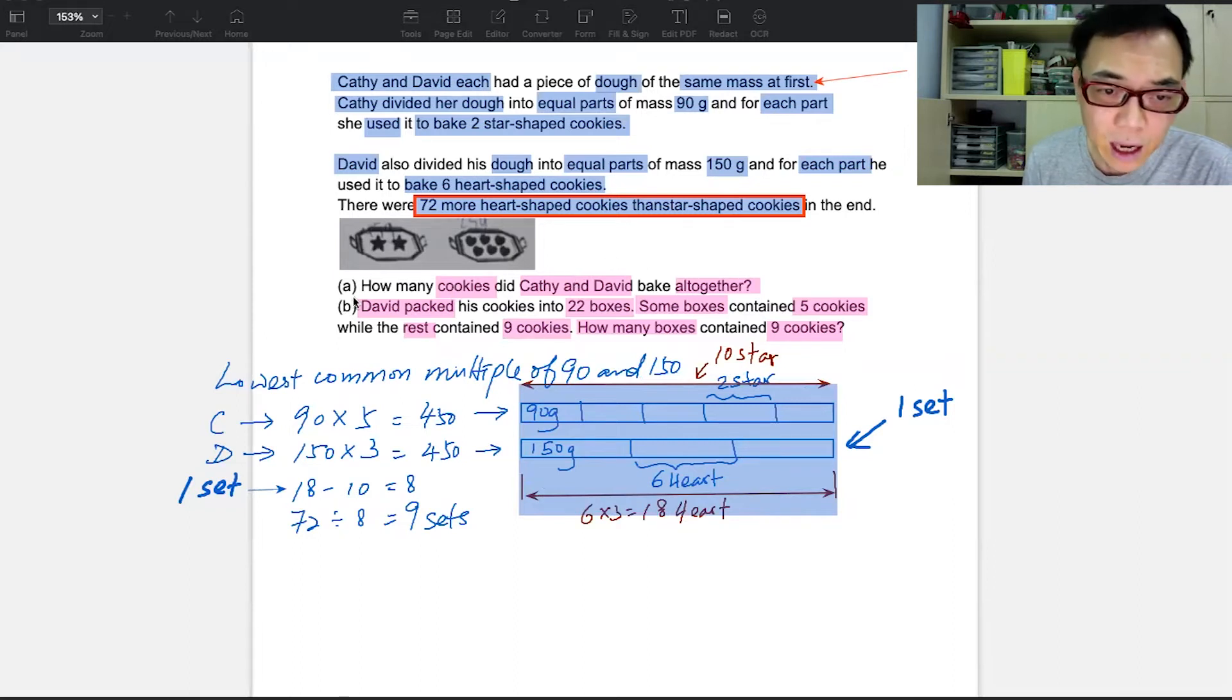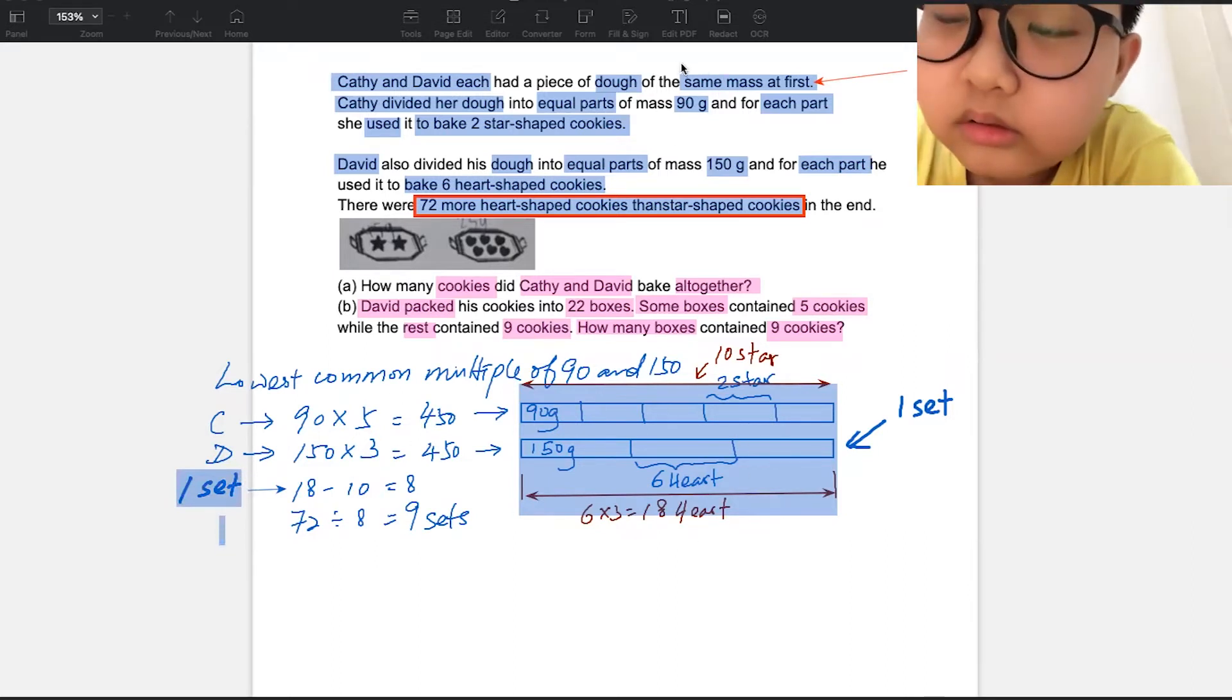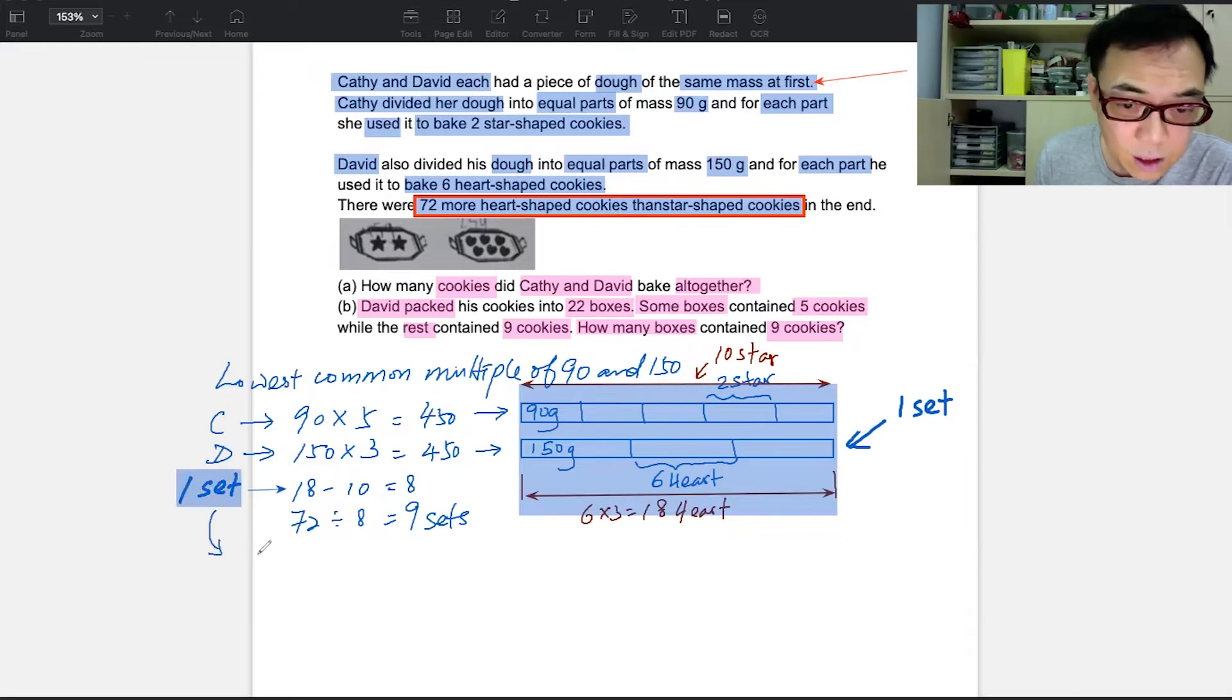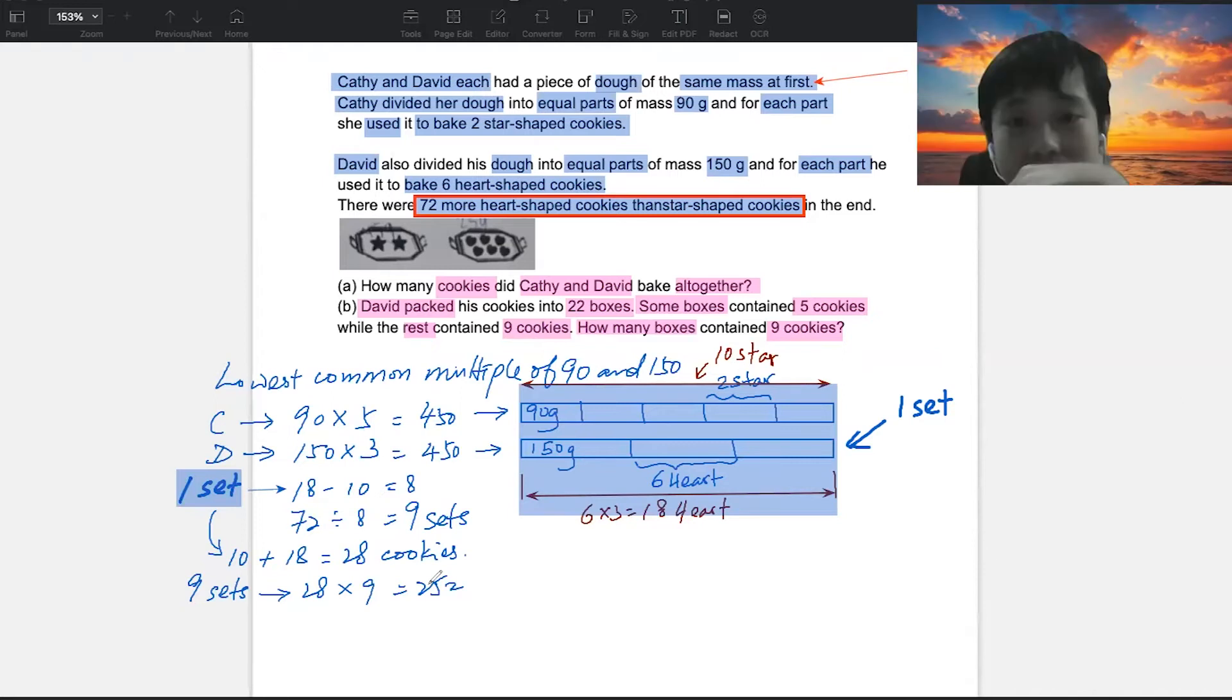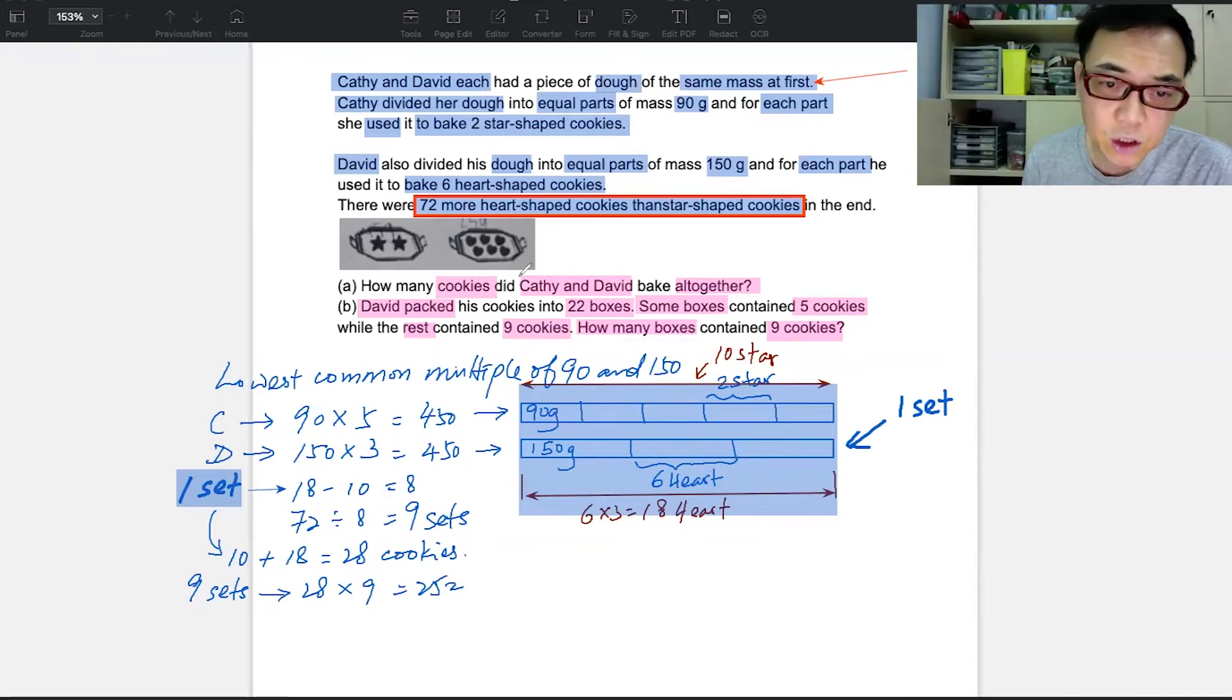Okay, so if I got 9 sets, it means that I got 9 of this now. Not one, this is just one of them and there are altogether 9 of this. So if there are altogether 9 of this, then let's answer the first question. How many cookies did Katie and David have all together? Now can you tell me in one set, how many cookies are there? Li Jie? 28. Total, total. 28. One set is made up of 10 star-shaped cookies and 18 heart-shaped, giving you 28 cookies. Now this represents one set. But there are how many sets? 9. So 28, what should I do? 28 times 9. Very good. Well done. Excellent. So 28 times 9 is 180 plus 72, so that should give you 252. Can you check that on the calculator for me please? Yeah, the answer is 252.